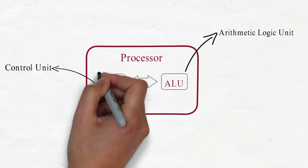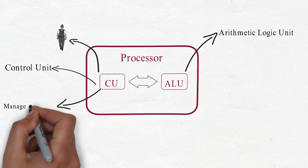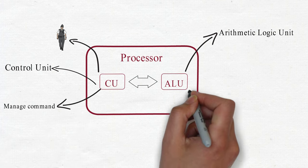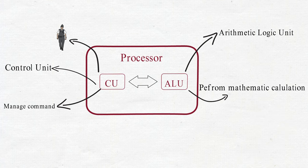The CU works like a traffic police. It manages commands and instructions to be performed. The ALU performs all mathematical operations like addition, subtraction, comparison, etc.